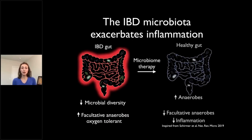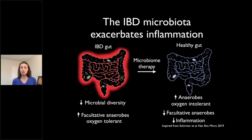The goal of microbiome therapy is to lead the system to have fewer of these facultative anaerobes and to encourage the growth of anaerobes — the oxygen-intolerant species. These are the species that tend to be very good at fermenting fiber and that produce compounds that actually reduce inflammation.